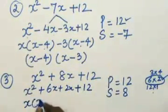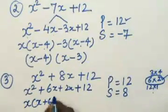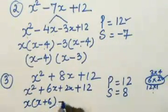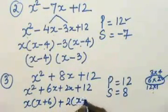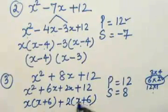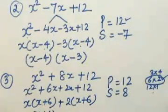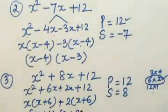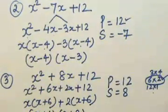Taking x common from the first two terms gives x + 6. Taking x + 6 common from the remaining terms, x + 6 is a common factor and you are left with x + 2. So the two factors are (x + 6) and (x + 2).